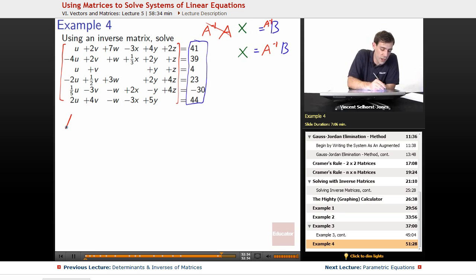So, we figure out what is A. So we figure out A is, it's going to be a big one, our U's first. 1U, negative 4U, 1U, negative 2, 1/5 U, 2U. Next up are V's, 2V, 2V, 1V, 1/2 V, negative 3V, positive 4V, 7W, 1W, 0W, because it didn't show up, 3W, negative 1W, negative 1W.